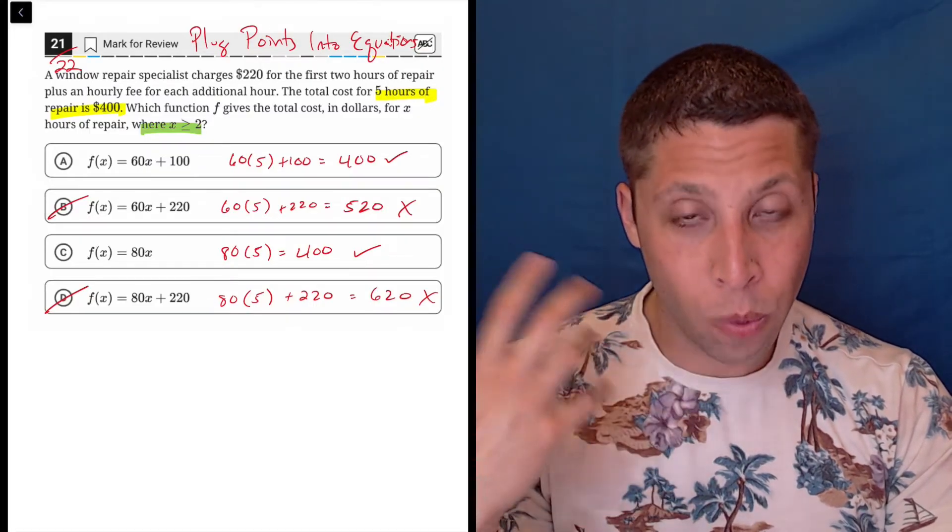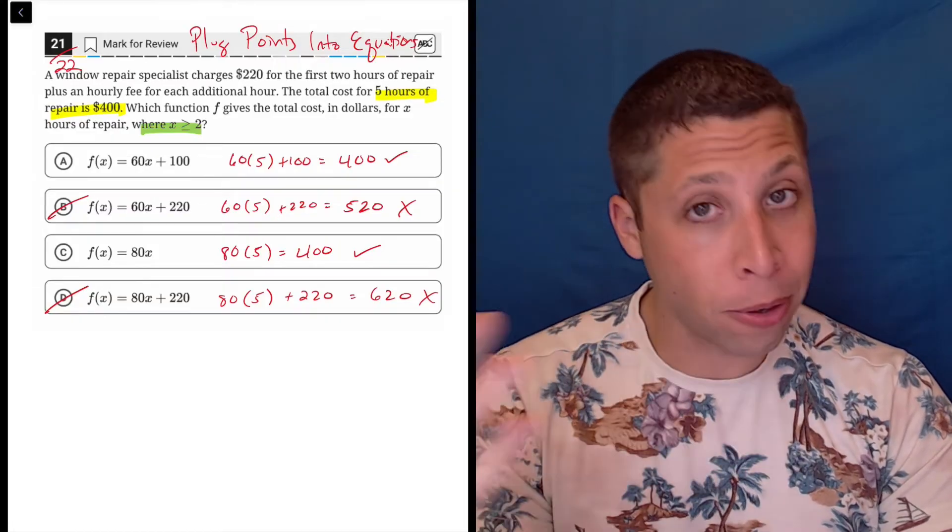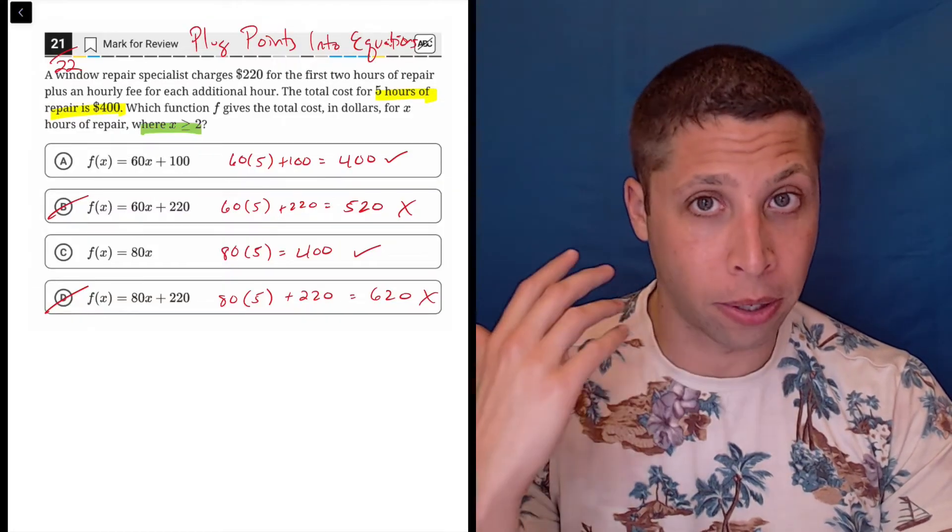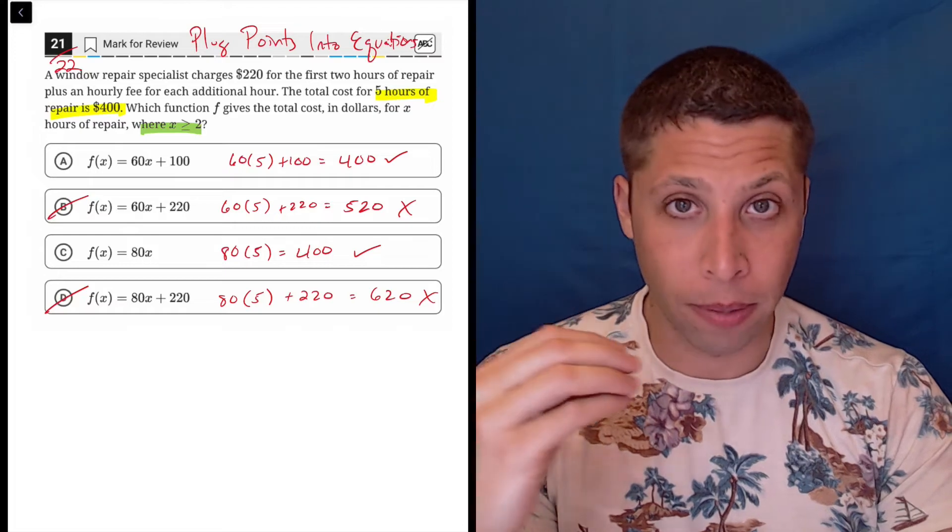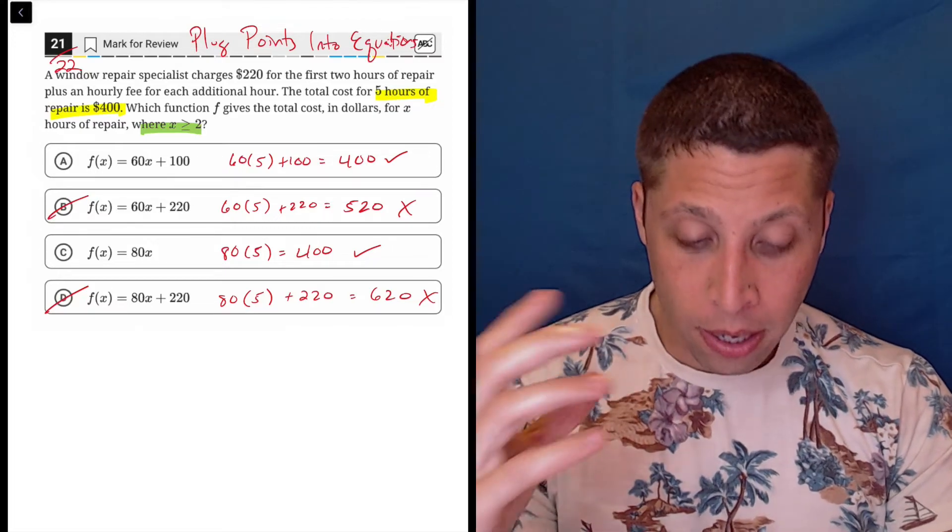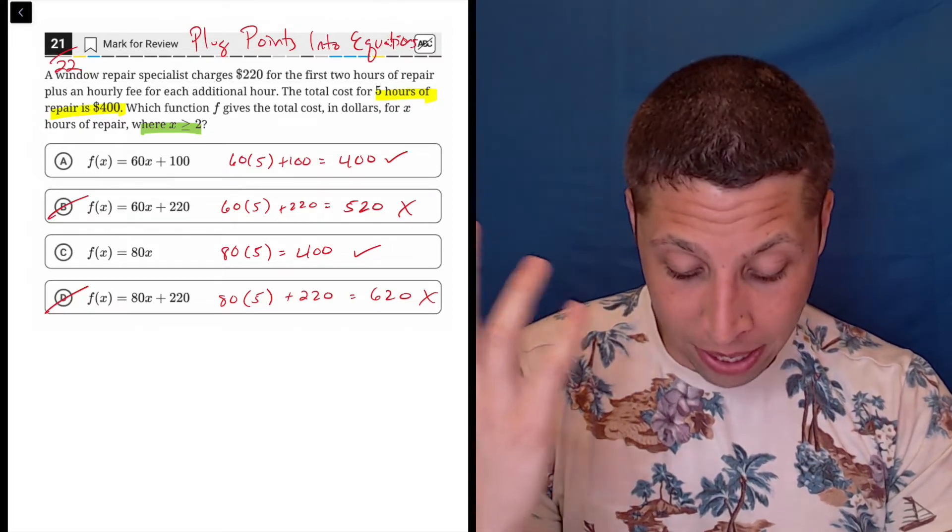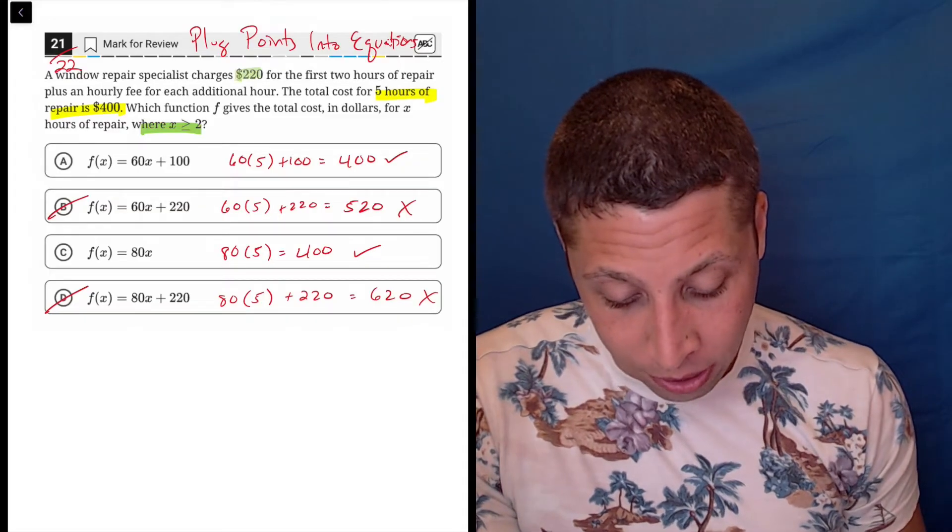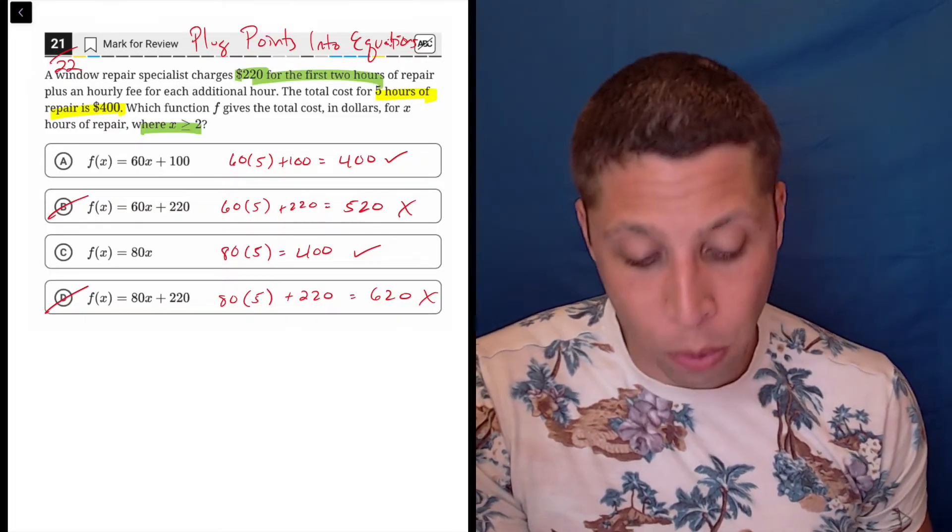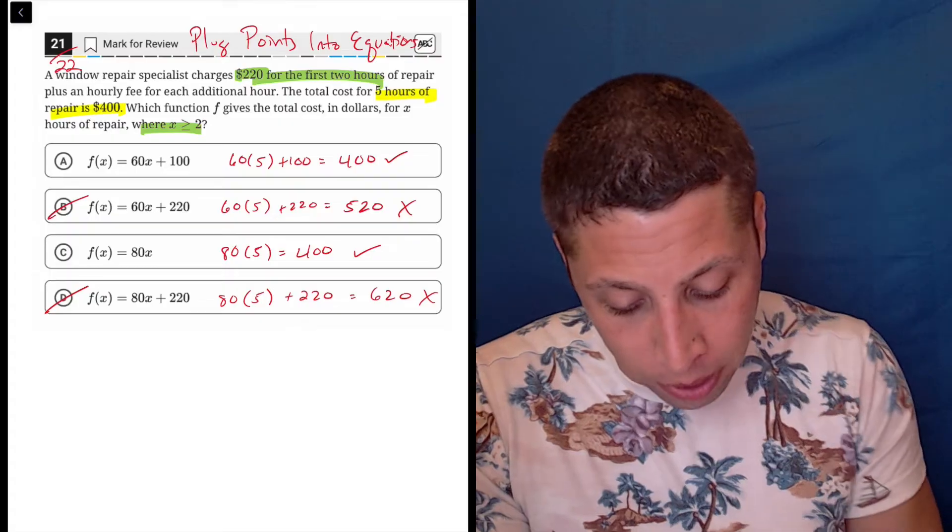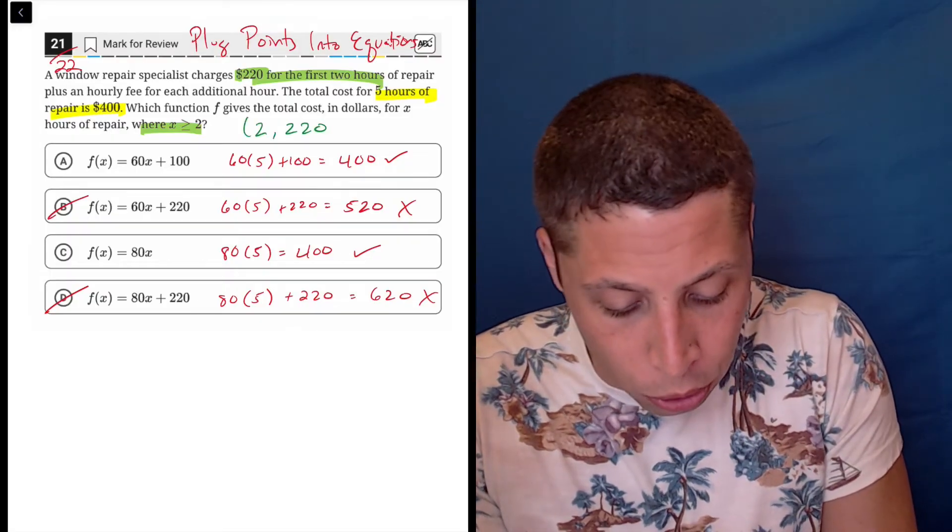So we can't choose zero. It's telling us that zero is out of the range for these particular equations, but two is fair game, right? They tell us it's 220 for the first two hours. So that also is a point. That's the point two, 220.